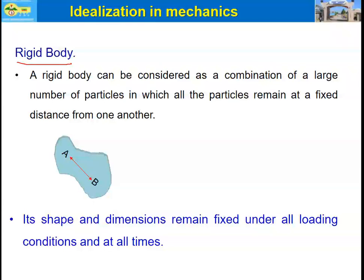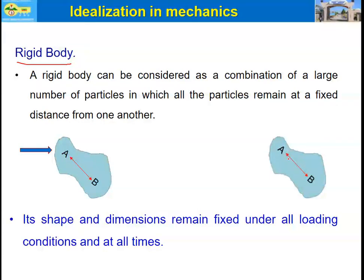The second idealization is the rigid body. A rigid body can be represented as a combination of a large number of particles in which all the particles remain at a fixed distance from one another. In reality an object may deform to some extent; however, the deformation is very small so we assume the object to be rigid. For example, with points A and B: when we apply force to the object there will be some movement, but no internal deformation — the distance between point A and point B remains the same before and after the force is applied.